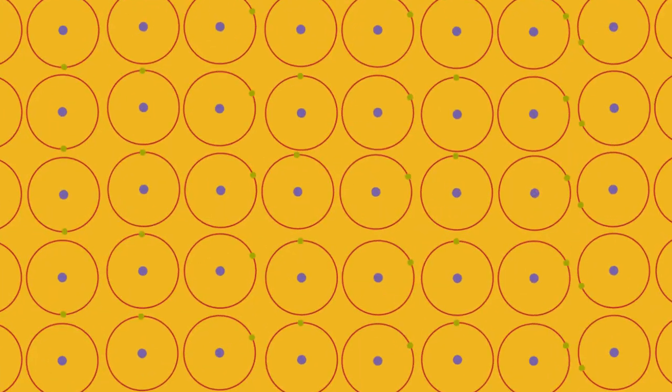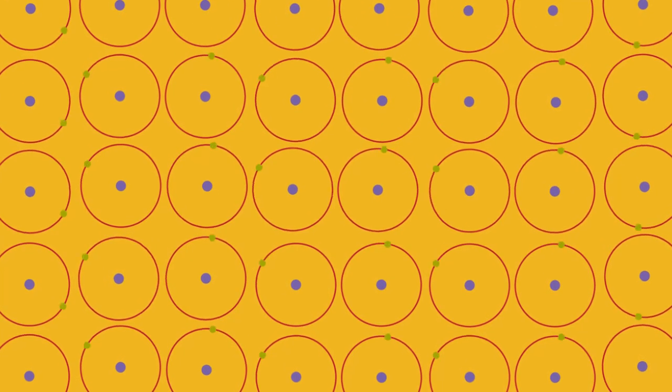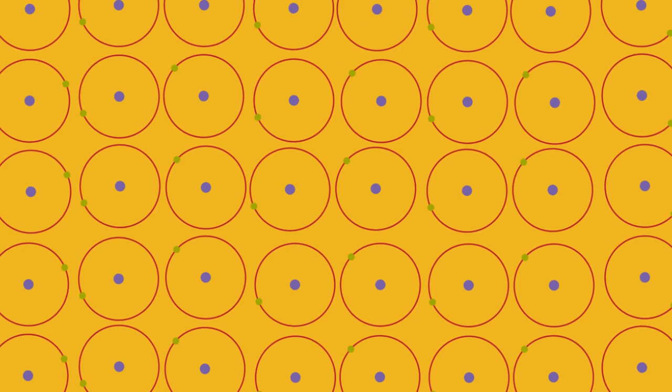Stars are born when clouds of dust and gas become very small due to the force of gravity. So small that the atoms in them don't have enough room anymore, getting extremely squeezed together, and everything starts to heat up.